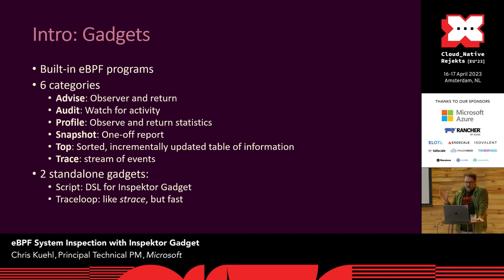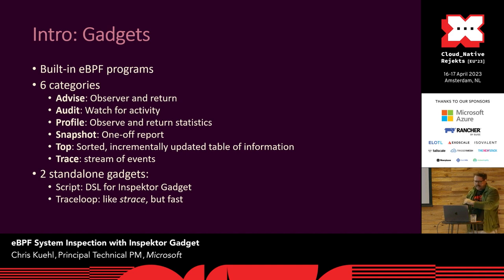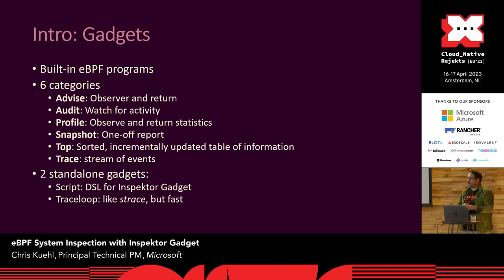We have snapshot — one-off queries like open sockets or open files. We have top — a sorted, incrementally updated table like the Unix top command. And trace, the most populated category, which provides a stream of events like TCP connect. We also have two standalone gadgets: Script, which is a domain-specific language for Inspector Gadget, and Trace Loop — basically like strace but running in eBPF.